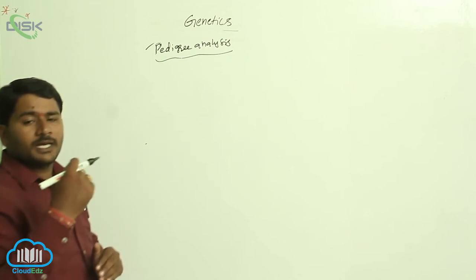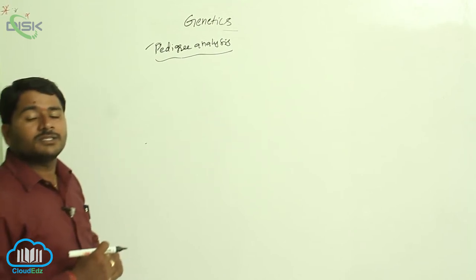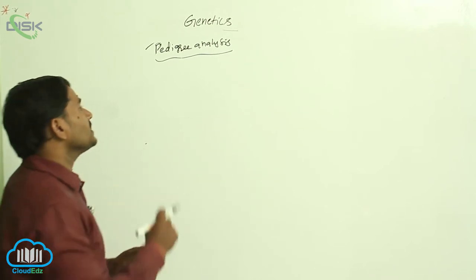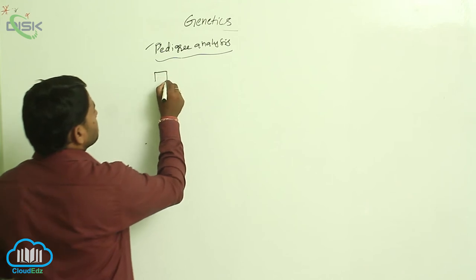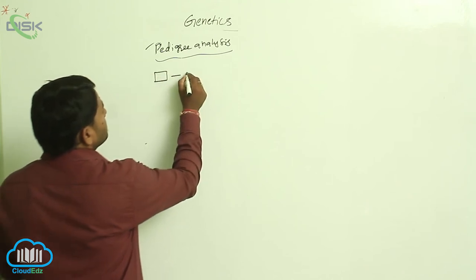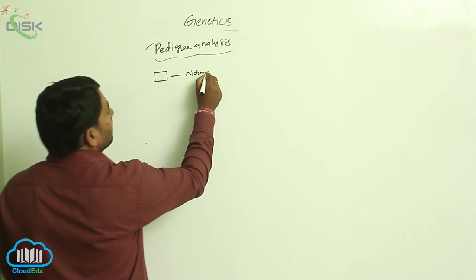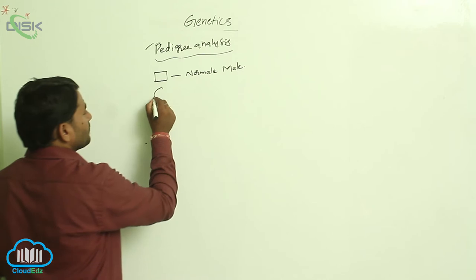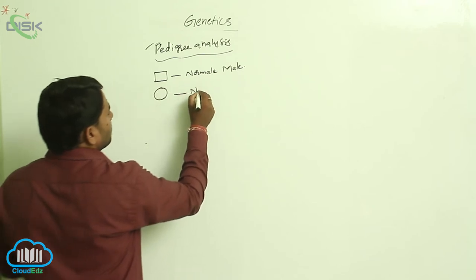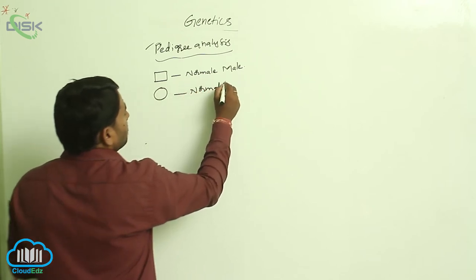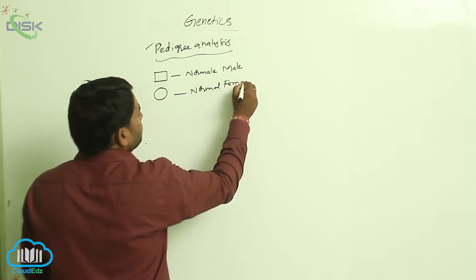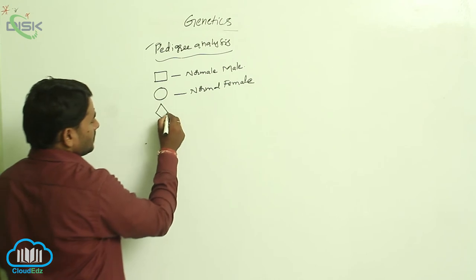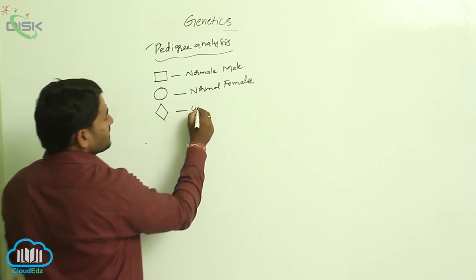In pedigree analysis, we analyze genes and their expressions in different types of individuals. We have different types of symbols. This symbol represents a normal male. This symbol represents a normal female. And this symbol represents unspecified sex.